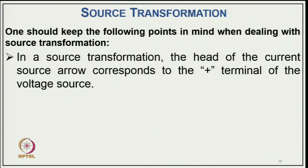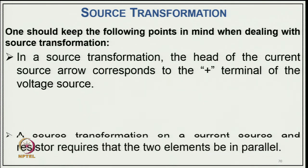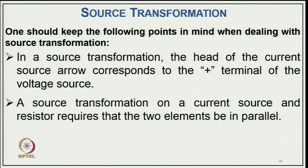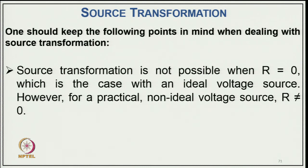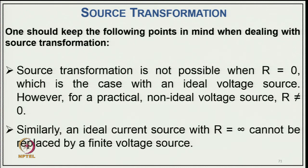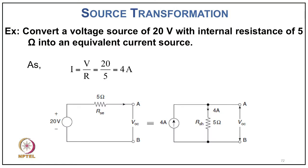Key rules for source transformation: the head of the current source arrow corresponds to the positive terminal of the voltage source. A current source and resistor must be in parallel for transformation; a voltage source and resistor must be in series. Source transformation is not possible when R = 0 (ideal voltage source) or R = ∞ (ideal current source). Example: a 20 V voltage source with 5 Ω internal resistance converts to a current source of I = 20/5 = 4 A in parallel with 5 Ω.